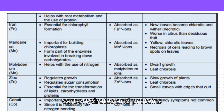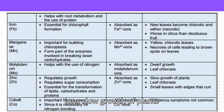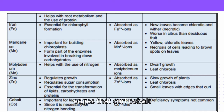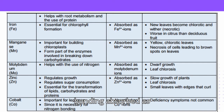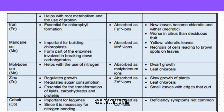Zinc (Zn): Regulates growth, regulates sugar consumption, and is essential for the transformation of lipids, carbohydrates and proteins. Absorbed as Zn²⁺ ions. Deficiency symptoms: slow growth of plants, leaf chlorosis, small leaves with edges that curl. Cobalt (Co): Important for legumes — provides enzymes necessary for nitrogen bonding. Absorbed as Co ions. Deficiency symptoms are not common.